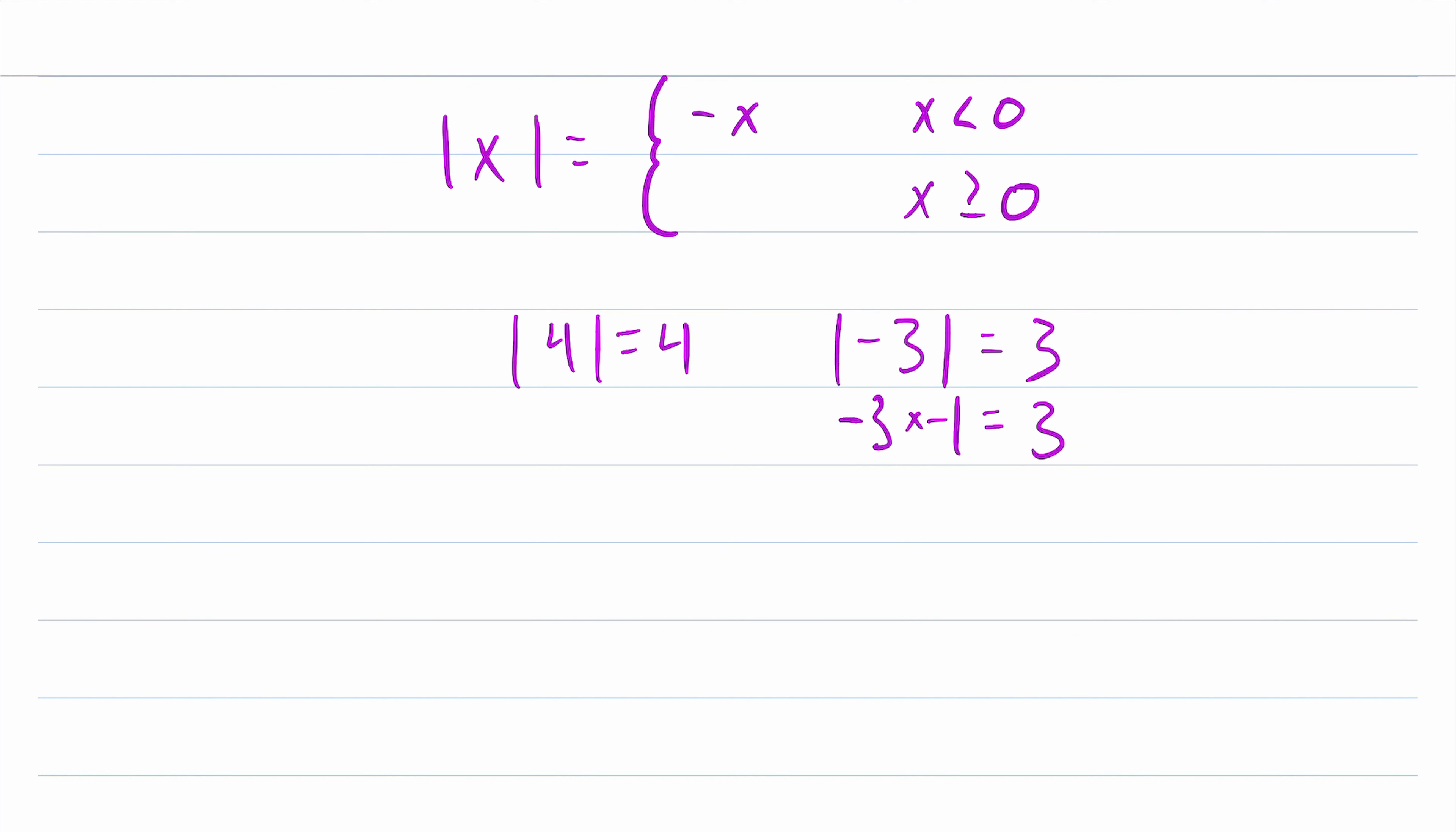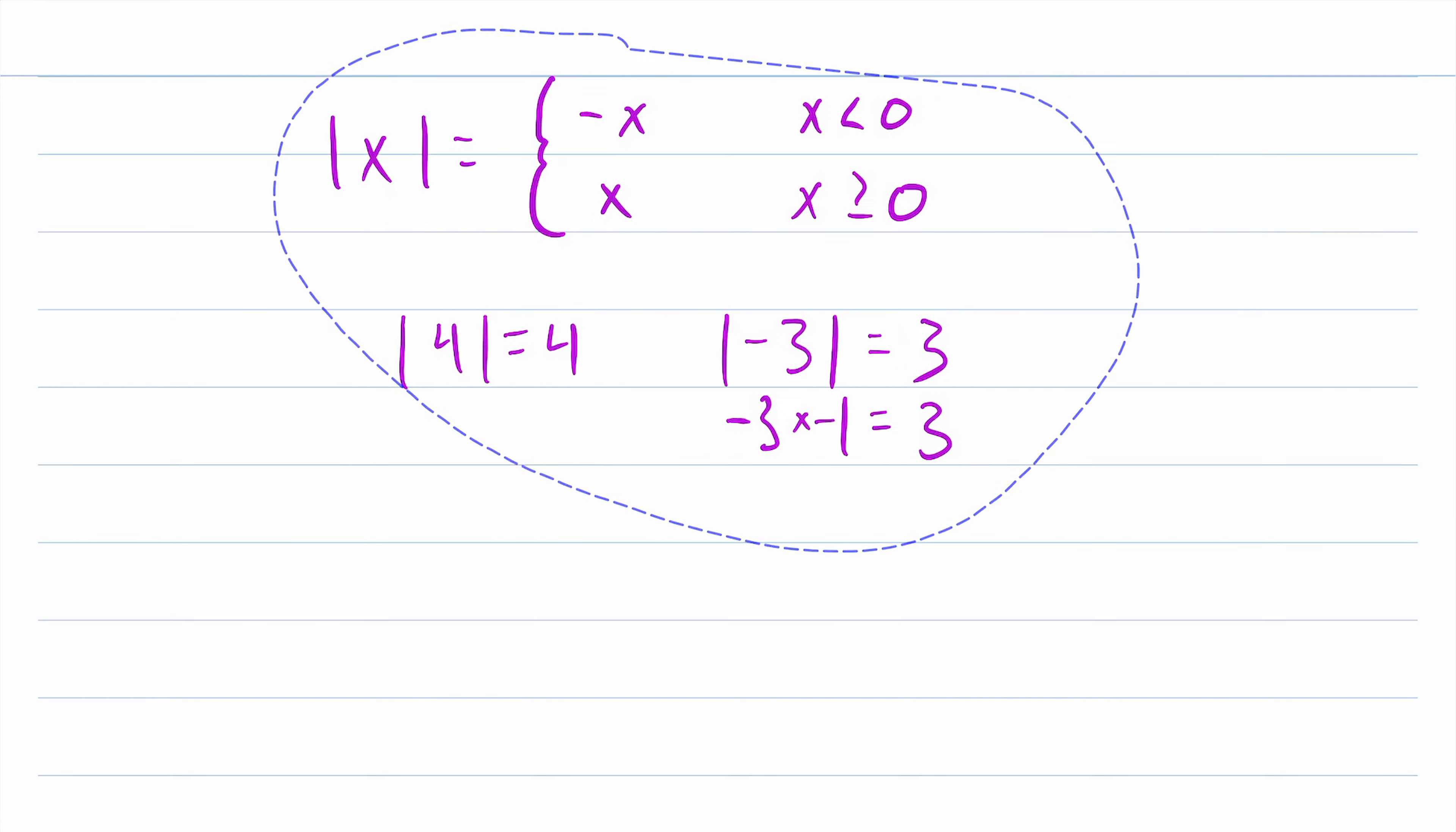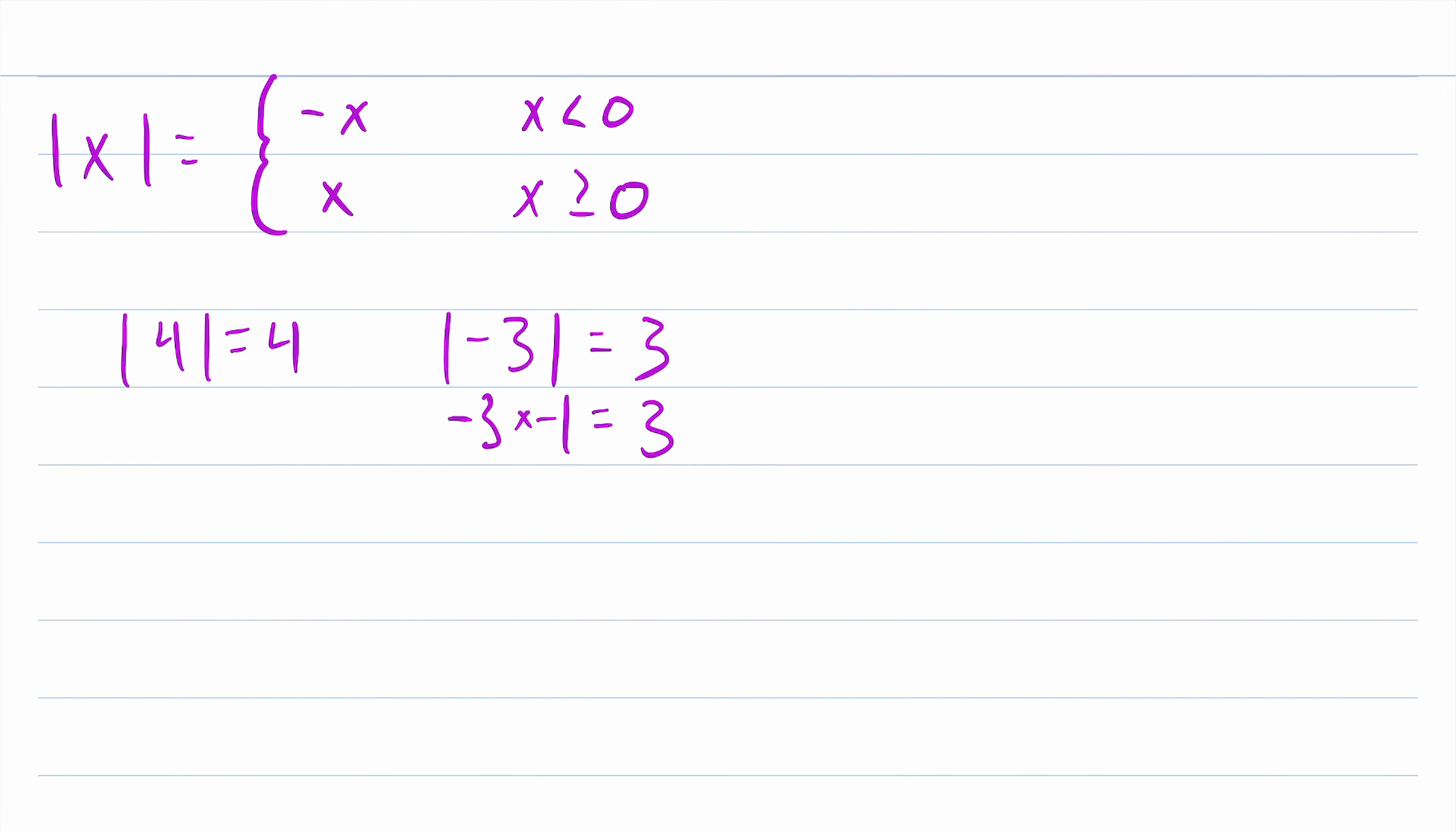However, if we input a number greater than or equal to 0 into our absolute value function, the sign of that does not need to be changed. So it just outputs the input value. If we input a value of 4, 4 is greater than or equal to 0, so the absolute value just spits out 4.